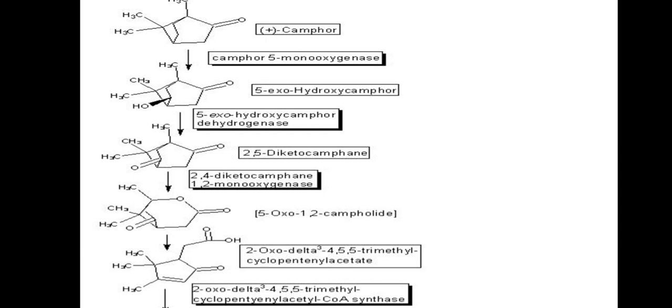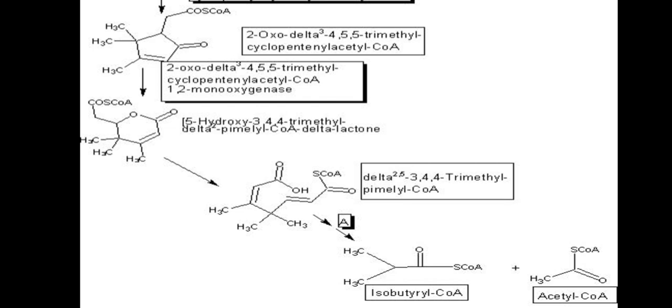This involves hydroxylation and 2,5-diketone-1,2-monooxygenase synthesis. The involvement of delta-3,4,5,5-trimethyl cyclopentyl acetyl CoA 1,2-monooxygenase was not experimentally established, but is suggested by the accumulation of the delta-lactone of 5-hydroxy-3,4,4-trimethyl delta-2,5-methyl from 2-oxo-delta-3,4,5,5-trimethyl cyclopentyl acetate.